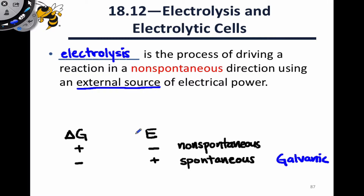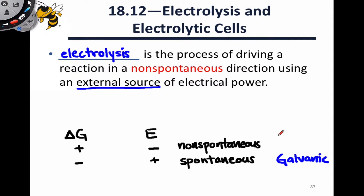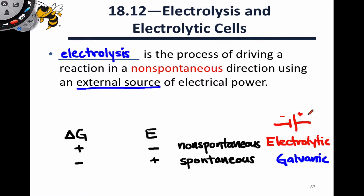But when delta G is positive and the cell potential is negative, if we hook up the cell as a galvanic cell, we'll get the reverse reaction occurring, which is often the opposite of what we want. In this case, we can use a different type of cell called an electrolytic cell to drive the reaction forward. The key new player in an electrolytic cell is some external source of current that drives the reaction forward and provides the free energy necessary to do so.